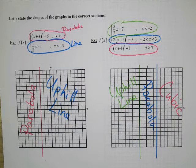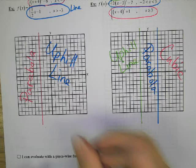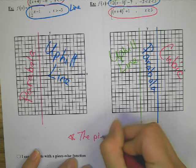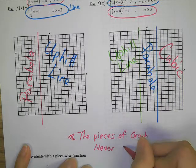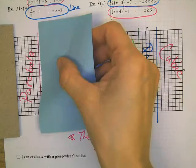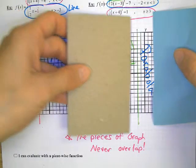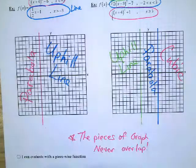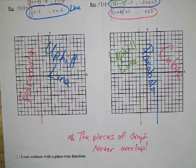Something to note: the pieces of the graph never overlap. It's very important that the pieces never overlap each other. You can use your hands or pieces of paper or post-its to visualize just a parabola or just a line. You should never have overlapping graphs. I hope this helps you understand piecewise.